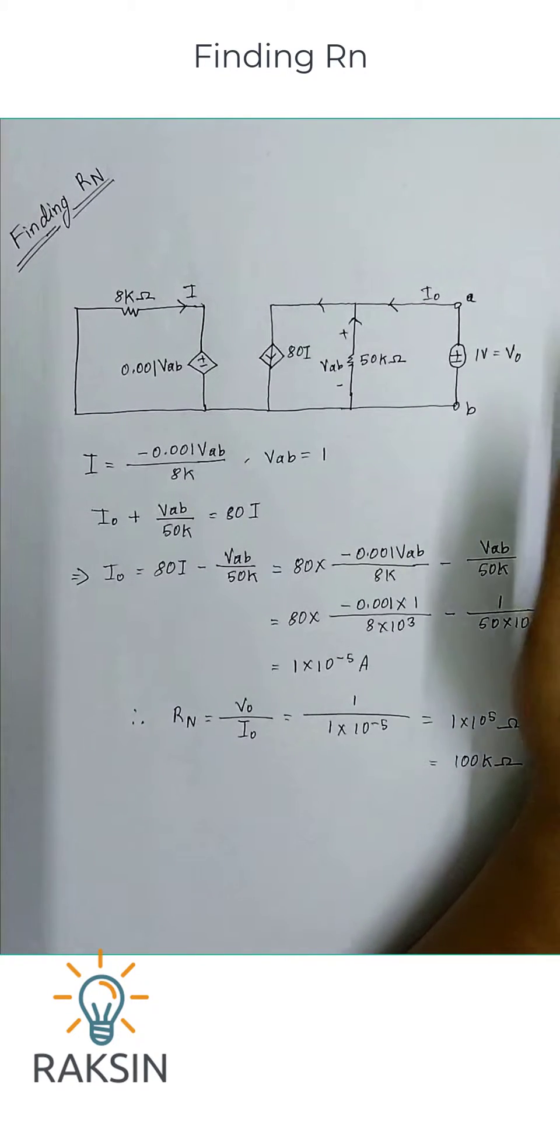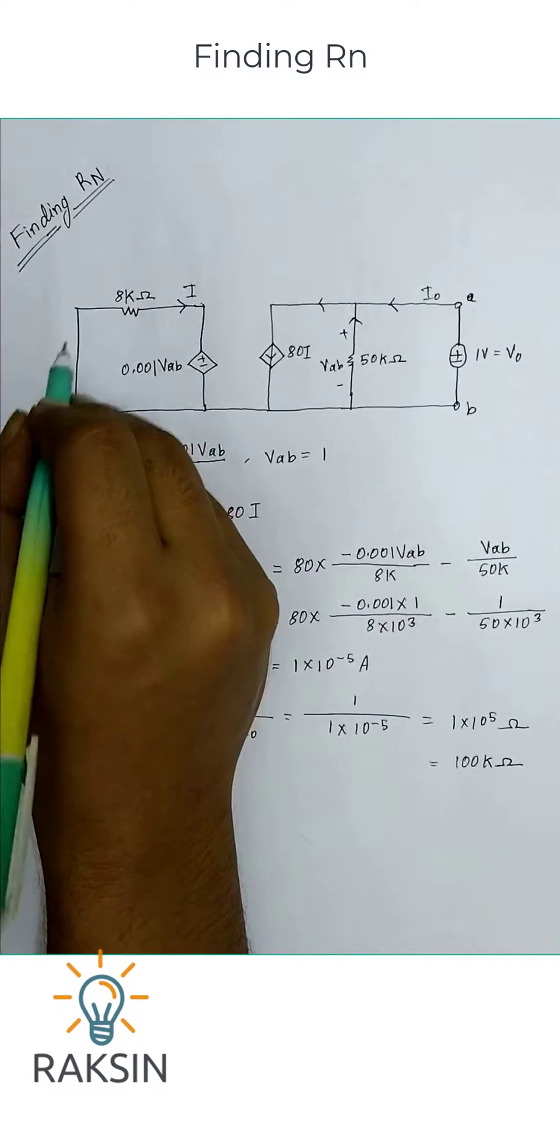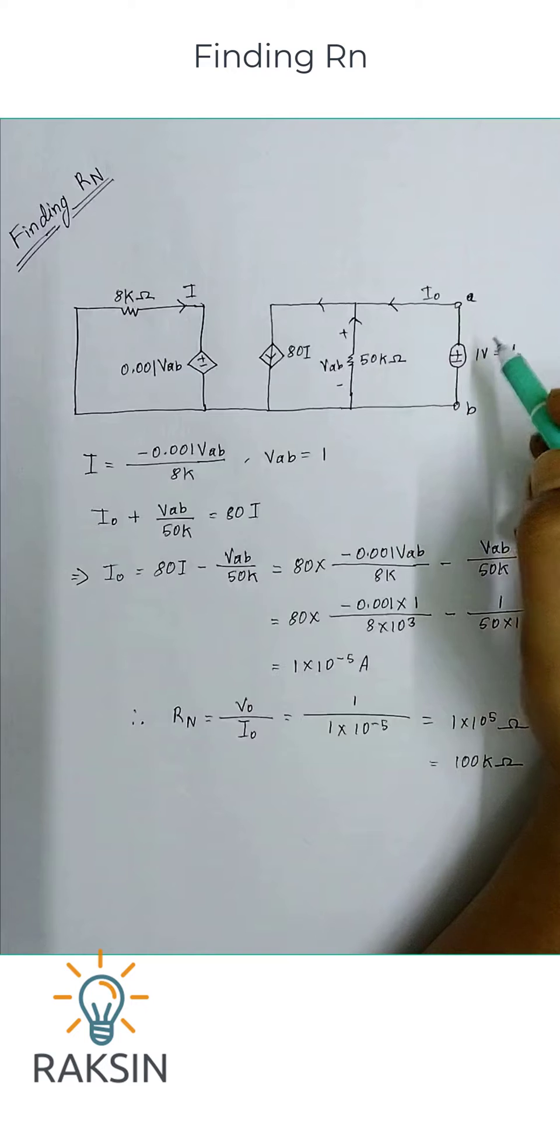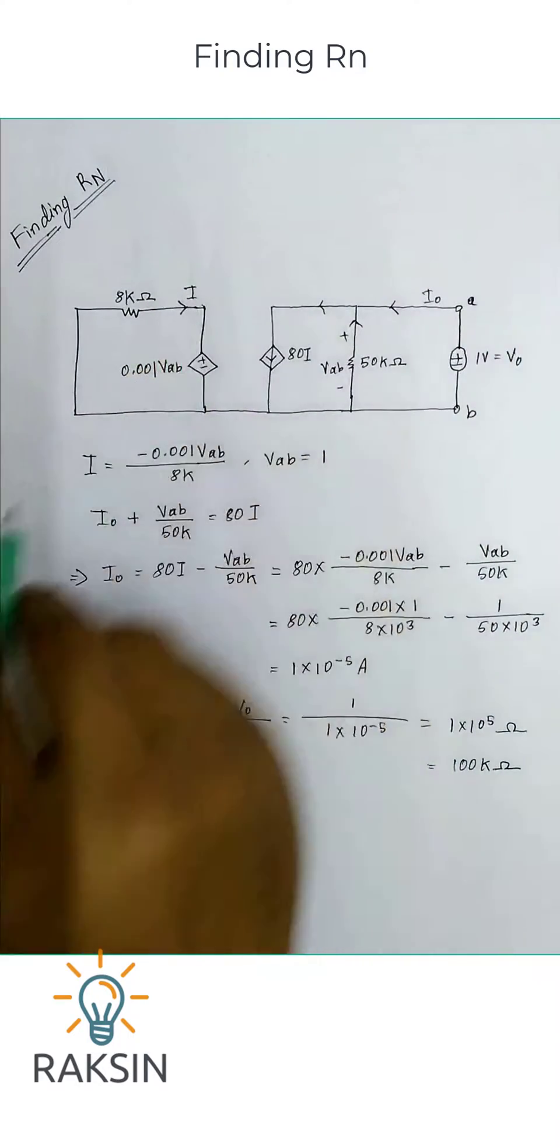In this question we have a 2 volt voltage source at this point, so we have shorted it out. Now we have two ways: one is adding 1 ampere current source at this terminal, or 1 volt voltage source at this terminal. I have added 1 volt voltage source at terminal A and B.